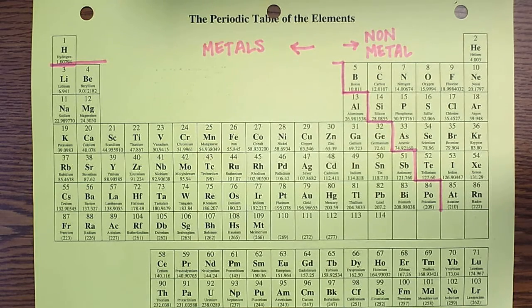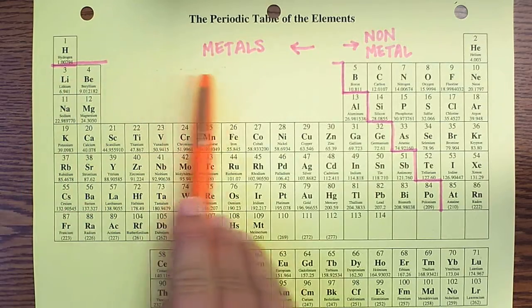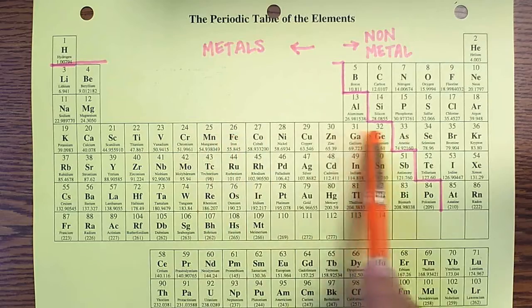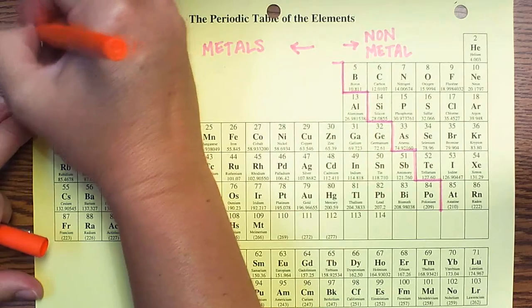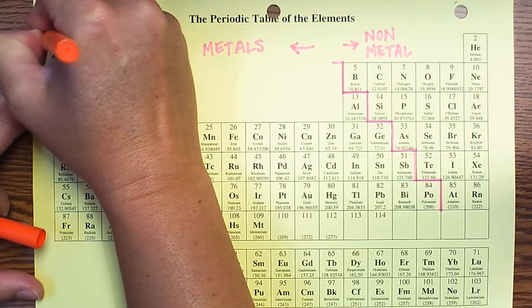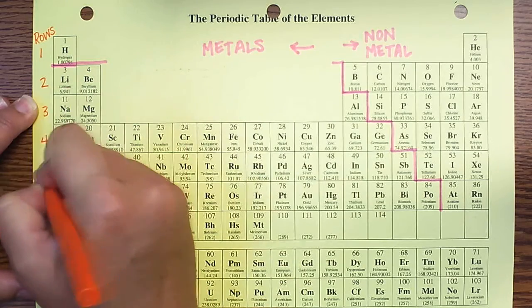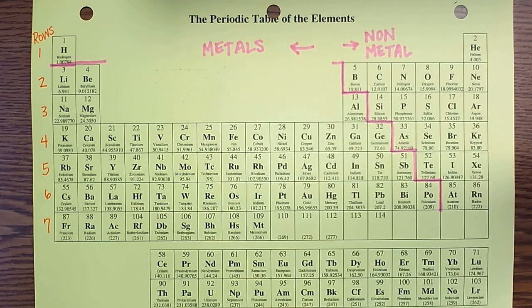Another thing I'd like you to label is the difference between rows and columns on the periodic table. A row goes left to right — one, two, three, four, five, six, seven. We actually have seven rows on the periodic table.